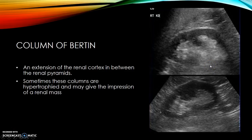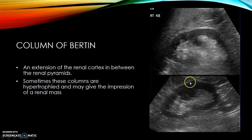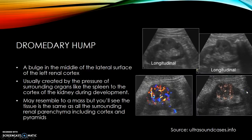The columns of Bertin are cortical bands between the medullary pyramids. Sometimes you have a large column of Bertin, called a hypertrophied column of Bertin, which can be mistaken for a mass. These patients have a lot of sinus fat with a little invagination — that's just a larger-than-usual column of Bertin. You can see it has the same echogenicity as the rest of the renal tissue and there is no contour defect, making a tumor highly unlikely.